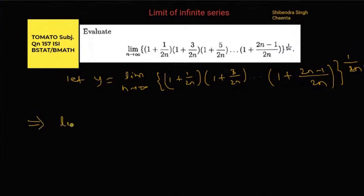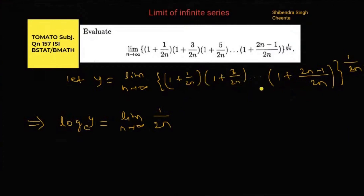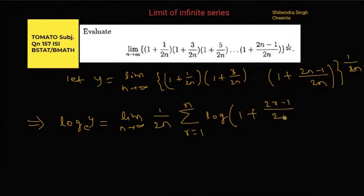Taking log on both sides, we get 1/2n. Now this comes into the log of this product, and log of a product is equal to sum of log of (1 + (2r−1)/2n).